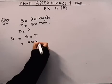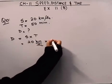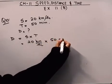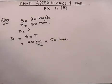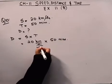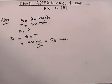I can write it as 20 km per hour into time is given as 50 minutes. Now the problem is, we have the units as hour here, and here the units are minutes.